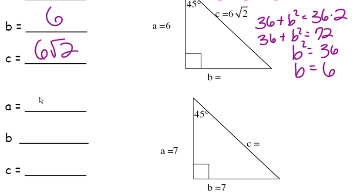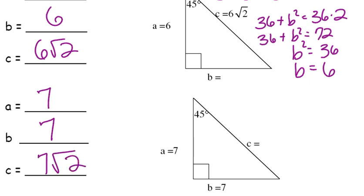In this next triangle, we've got A is 7, B is 7. I need you to use the Pythagorean Theorem and tell me what C is. So go ahead and do that, and come back when you have your answer. You should have gotten that C equals 7 radical 2.